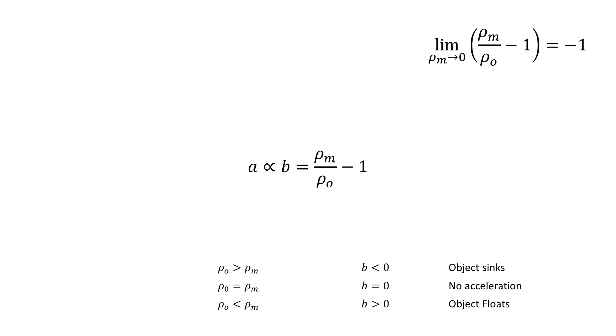We also have a linear relationship between the medium's density and b, and this means that if the medium's density approaches 0, it approaches a constant value, and we can work with this. When the medium's density is 0, b is equal to minus 1, and we can compare to experiment, and we find that when the medium's density is 0, the downward acceleration is 9.81 meters per second squared.